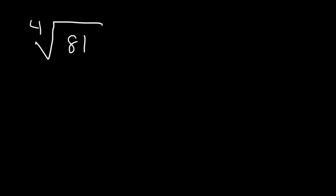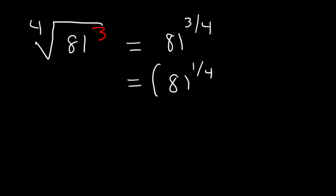Try this one. Calculate the 4th root of 81 cubed. Let's rewrite it as 81 raised to the 3/4. We can find the 4th root first, then raise it to the 3rd power. The 4th root of 81 is 3, because 3 times 3 times 3 times 3 is 81. And 3 to the 3rd is 27.